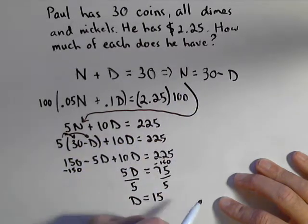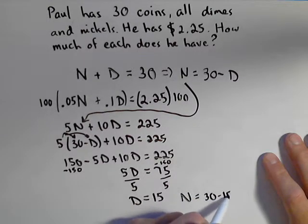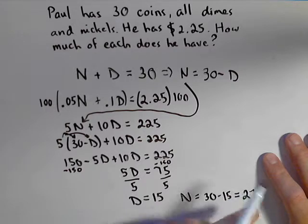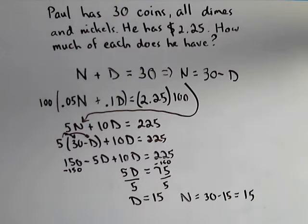Get the number of nickels. It's 30 minus the number of dimes. Or 25, not 25, sorry. Or 15. So 15 dimes and 15 nickels.